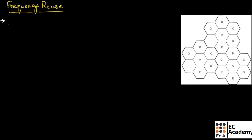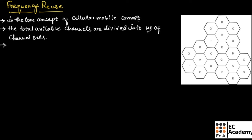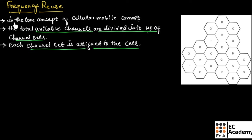The frequency reuse is the core concept of cellular mobile communication. In this concept, the total available channels are divided into a number of channel sets, and each channel set is assigned to a cell.